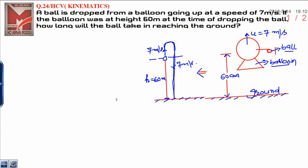Let's see. In this diagram, I have drawn a simple diagram of the balloon and the ball is dropped from the balloon. The balloon is moving up with a speed of 7 meters per second and the balloon is at a height of 60 meters from the ground.